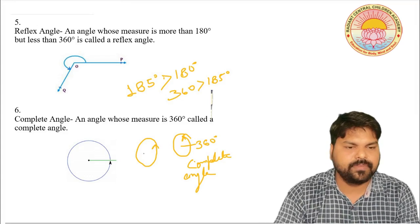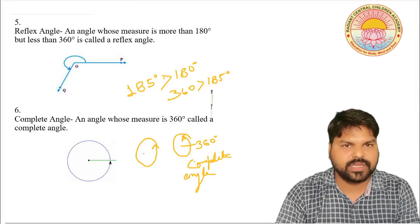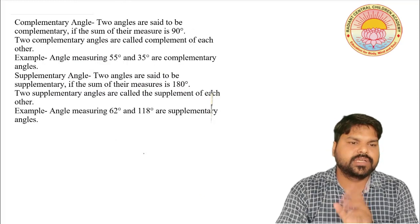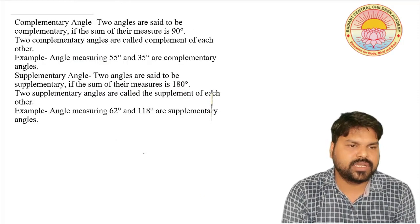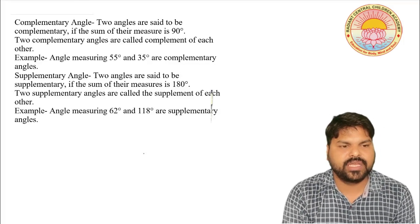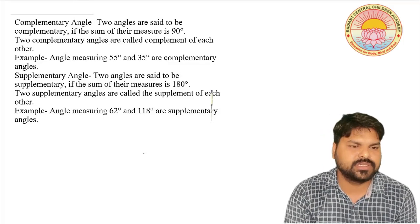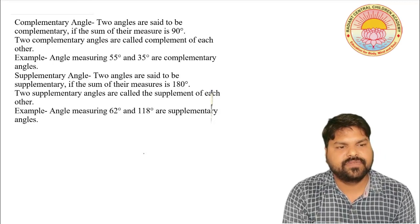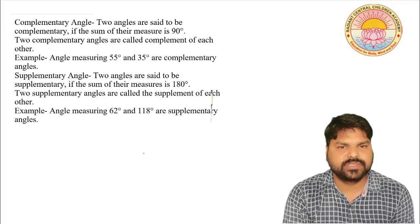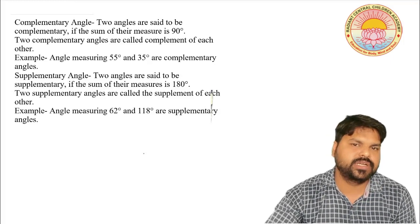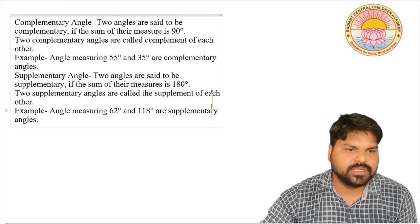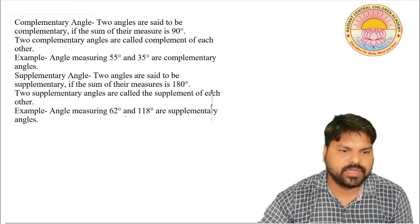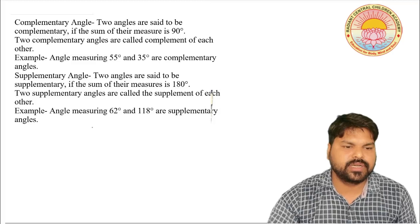Now there are two very important types of angles we discuss in Class 9, included in our chapter: complementary angle and supplementary angle. Two angles are said to be complementary if their sum is 90 degrees. We always select two angles, and if their sum is 90 degrees, we say they are complementary angles.